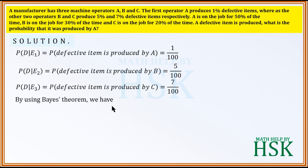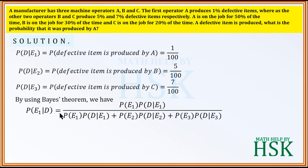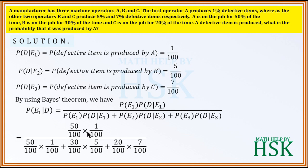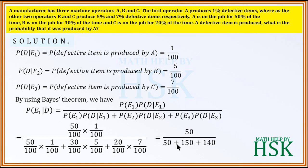Substituting into Bayes' theorem: P(E1 | D) = (50/100 × 1/100) divided by (50/100 × 1/100) + (30/100 × 5/100) + (20/100 × 7/100). All the 100s in the denominators cancel out, giving 50 / (50 + 150 + 140) = 50/340, which simplifies to 5/34. This is the required answer.